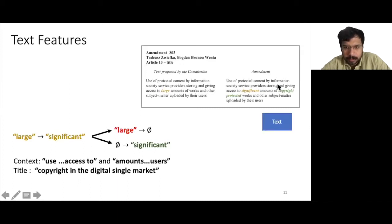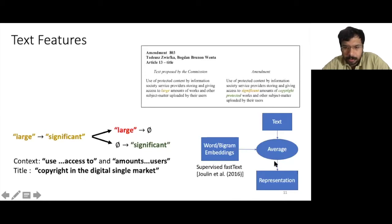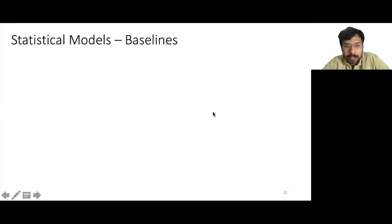Once we have this text, we tokenize it into words and bigrams and map them to the word and bigram embeddings that are trained using a supervised fast text model. We average these embeddings to get the final vector representation of the text.